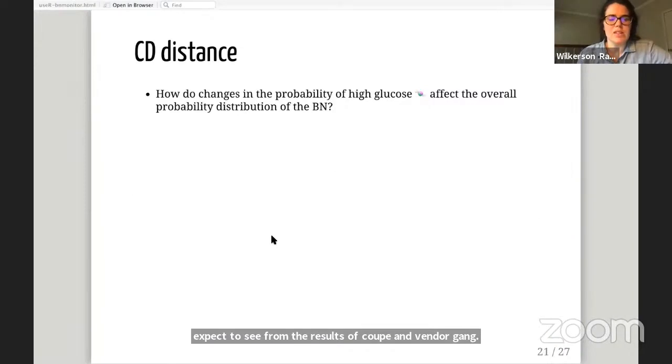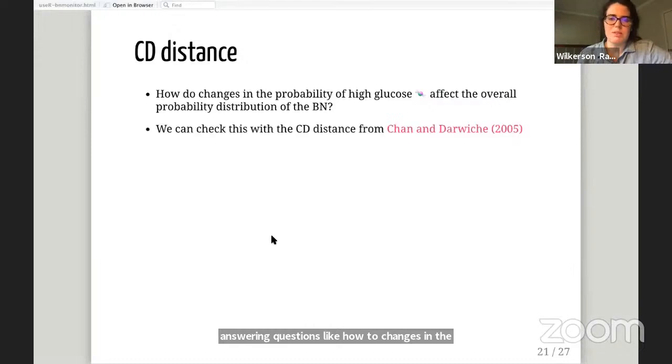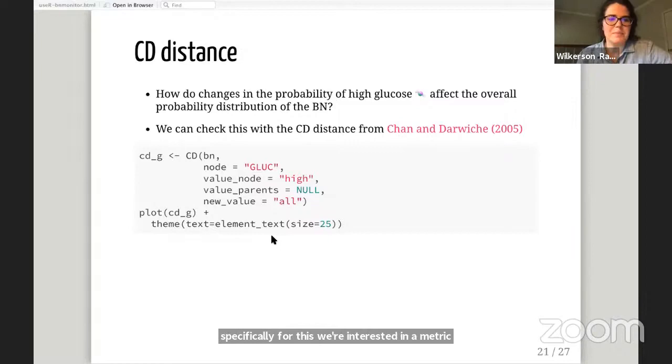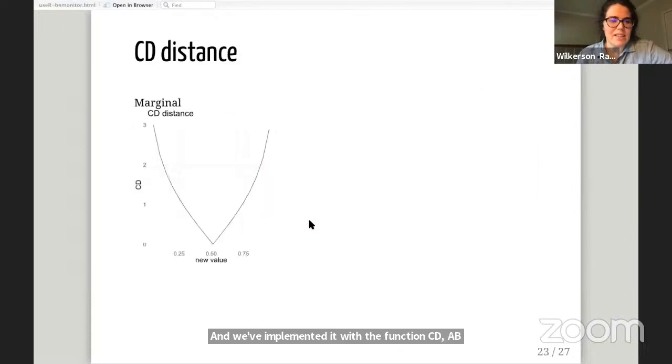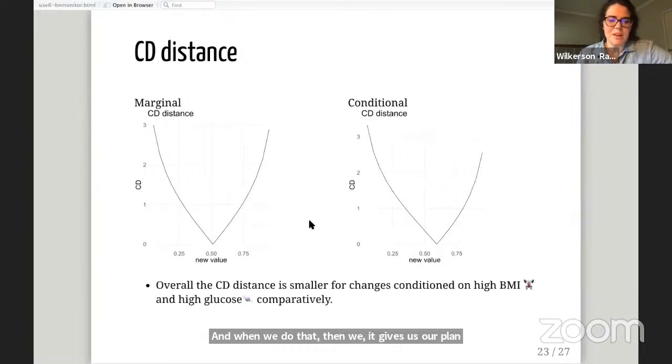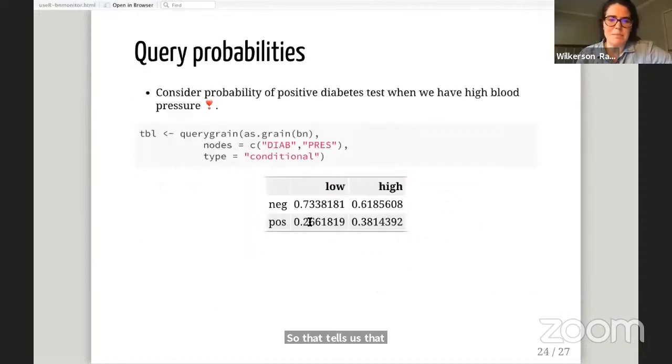The next function is called CD distance. With that, we're answering questions like how do changes in the probability of high glucose affect the overall probability distribution of the BN. There's lots of different metrics but we're interested in a metric called the CD distance. We've implemented it with the function CD. When we do that, it gives us our plots. We see that overall, the CD distance is smaller for changes conditioned on high BMI and high glucose comparatively. That enables us to measure the distance between our probability distributions.